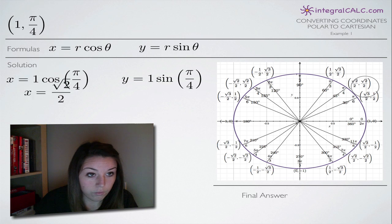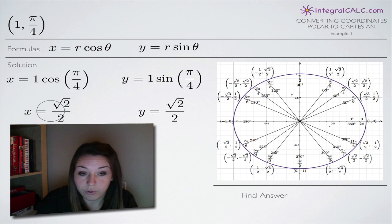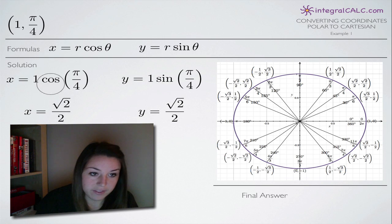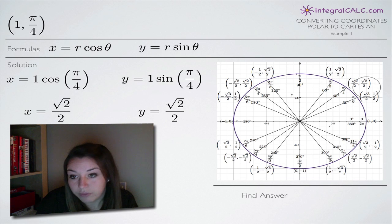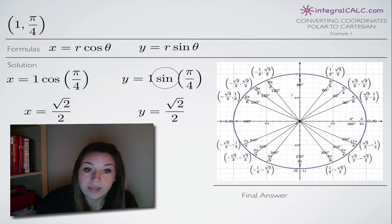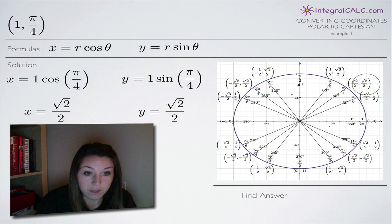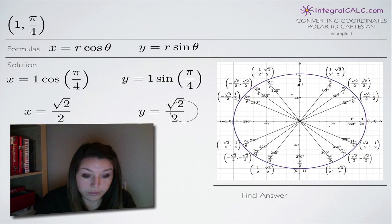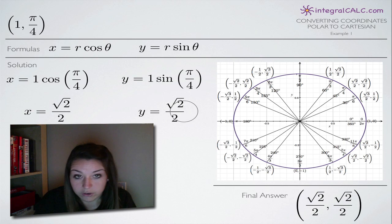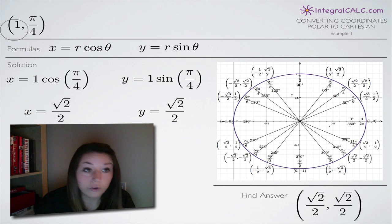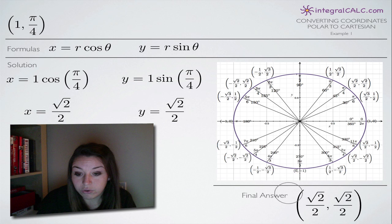So that tells us that x equals the square root of 2 over 2 and y equals the square root of 2 over 2, because cosine of pi over 4 gets replaced with the x-coordinate, the square root of 2 over 2, and sine of pi over 4 gets replaced with the y-term, the square root of 2 over 2. We put those together to get our Cartesian coordinates — that's our final answer. We've converted the polar coordinates 1, pi over 4 into Cartesian coordinates: square root of 2 over 2, comma square root of 2 over 2.